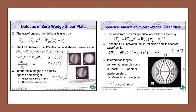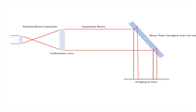Some examples of how aberrations impact the interferogram for a non-wedge shear plate are shown here. Defocus introduces straight equally spaced fringes, while spherical introduces a fringe spacing that decreases along X. These are the two main aberrations we observed in the lab.